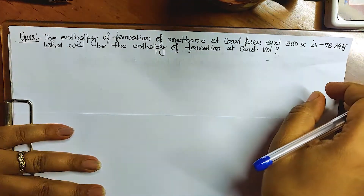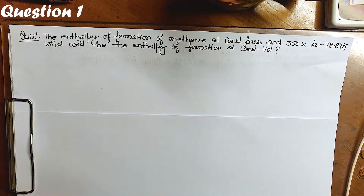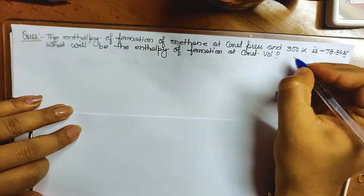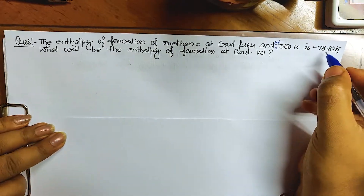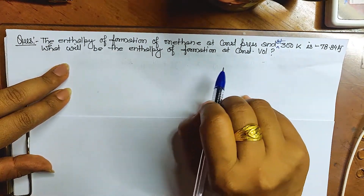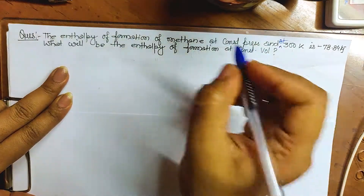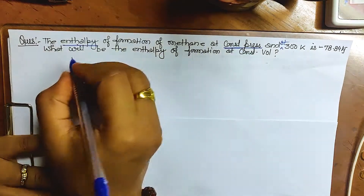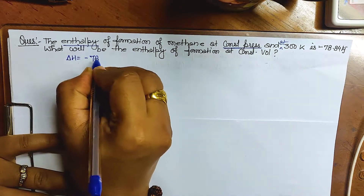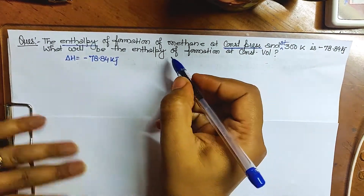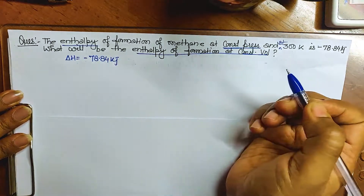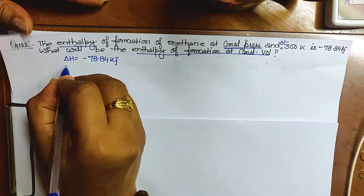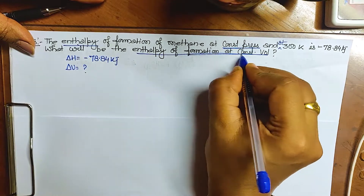Let's start with the first question. The enthalpy of formation of methane at constant pressure and 300 Kelvin is minus 78.84 kilojoule. We need to find the enthalpy of formation at constant volume. So delta H is given as minus 78.84 kilojoule, and since at constant volume we deal with internal energy, we need to find delta U.